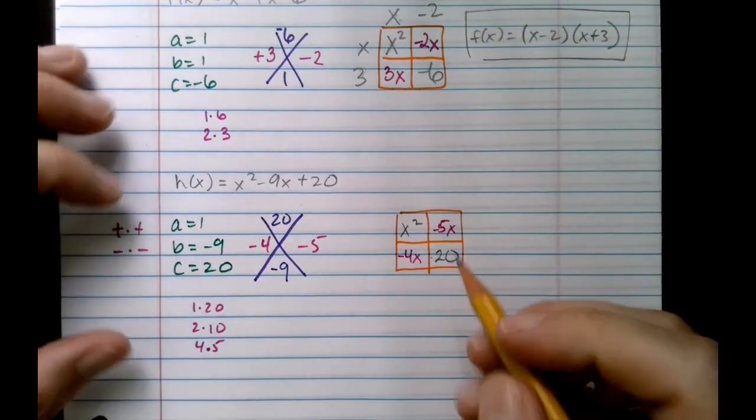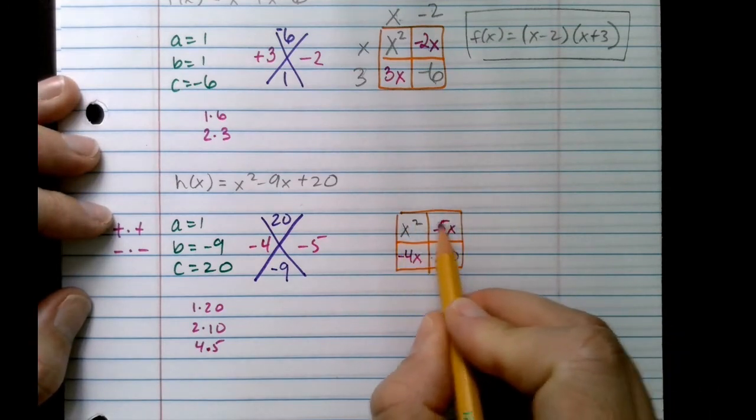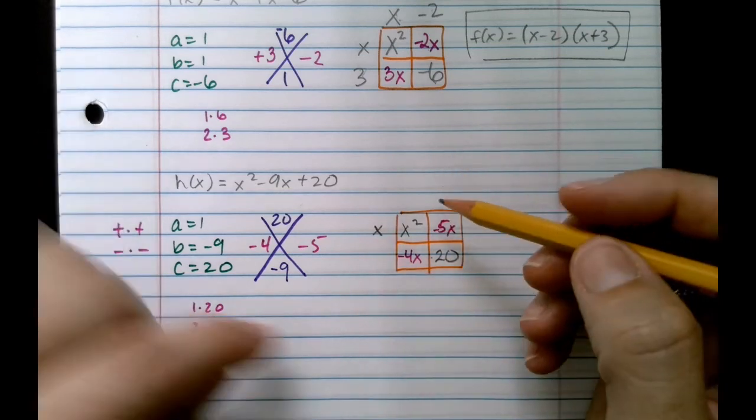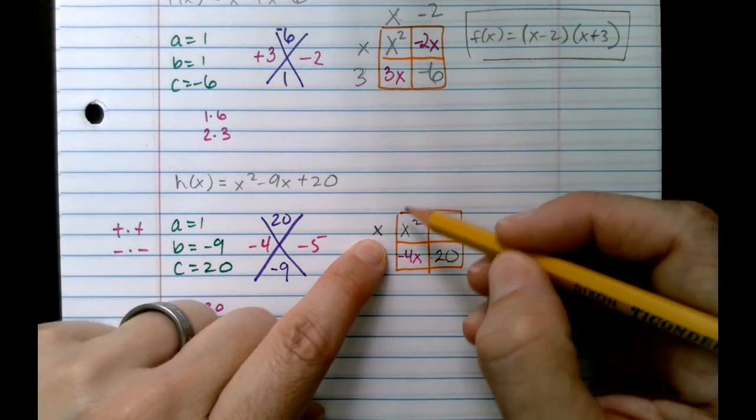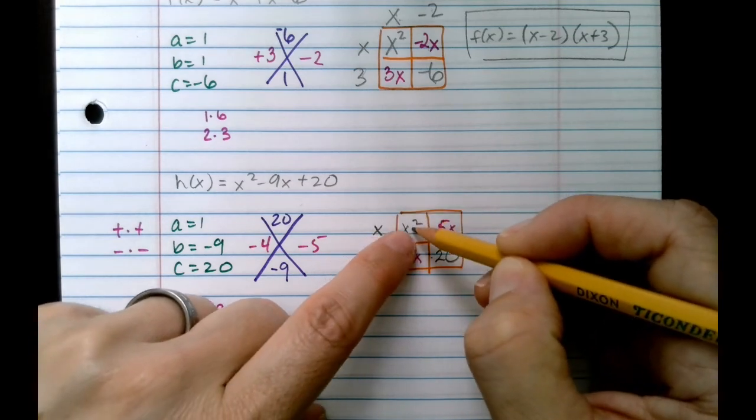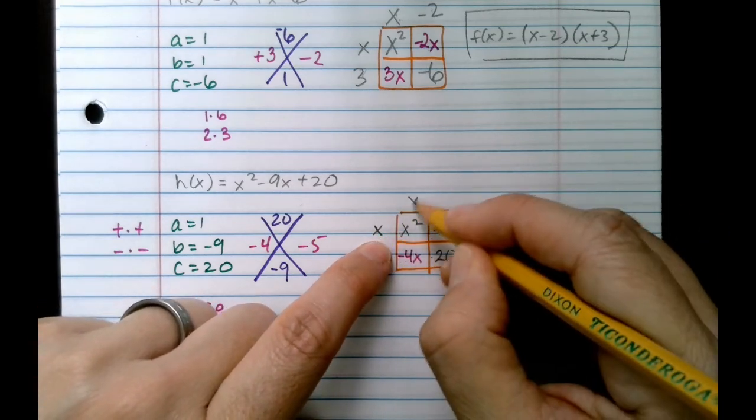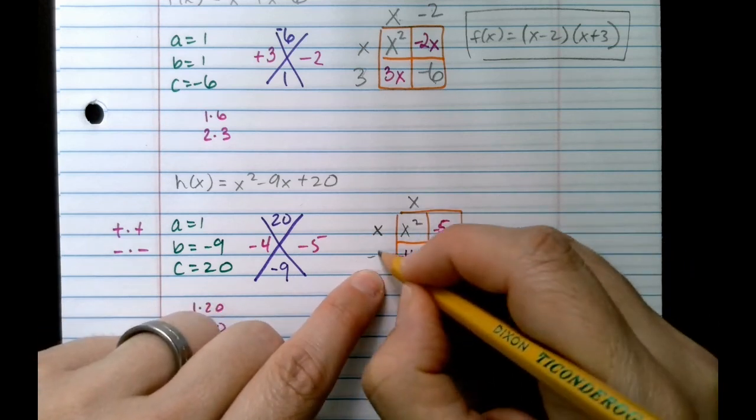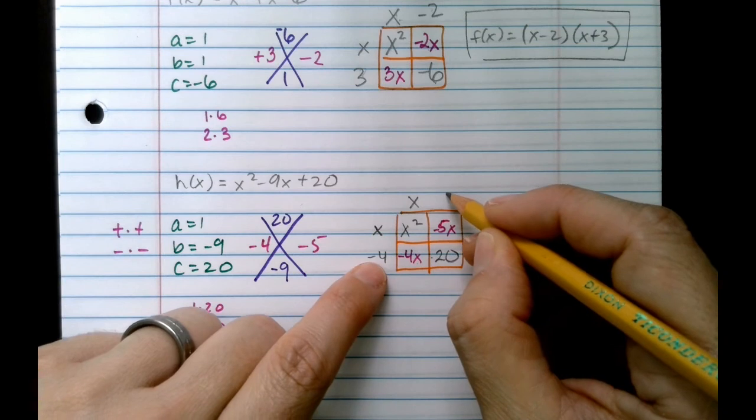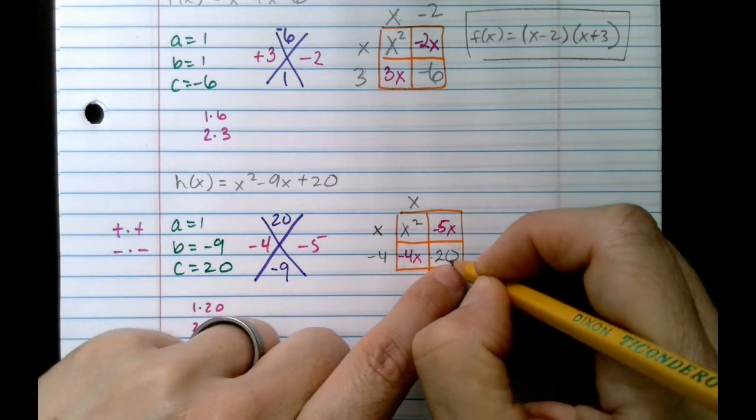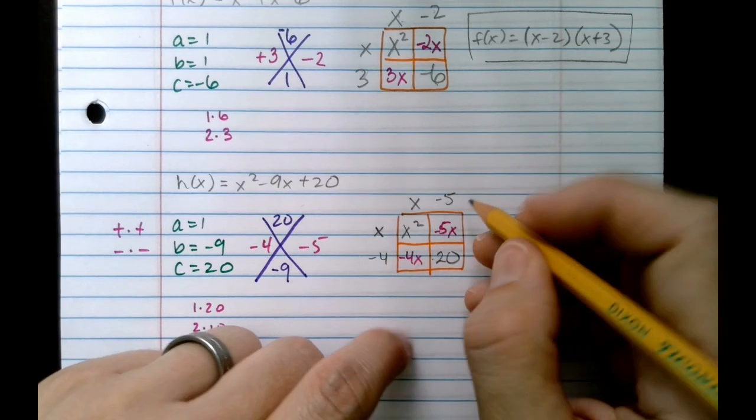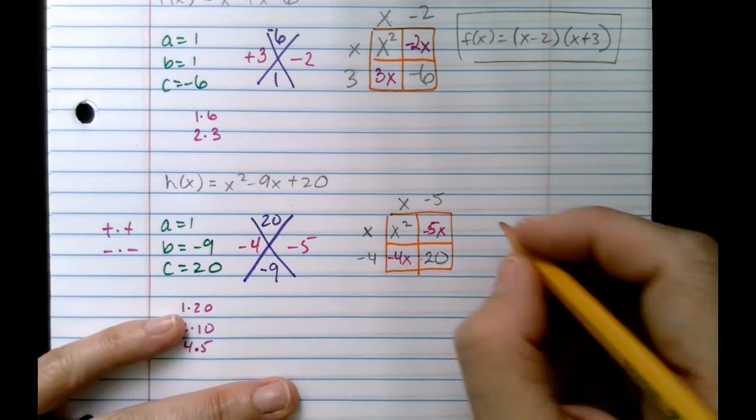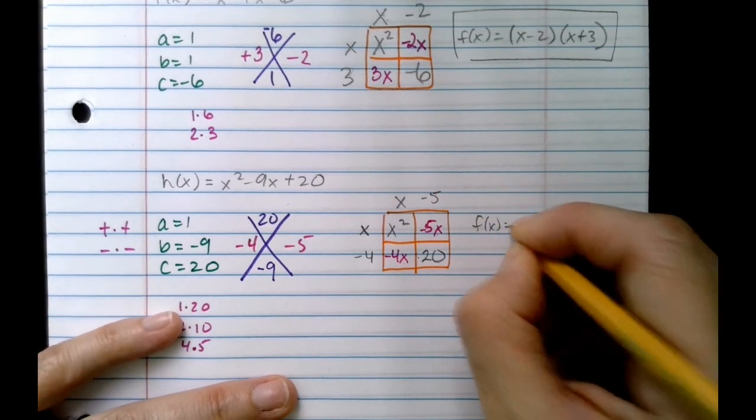Now we factor out the GCFs. So what is the GCF in this row between x squared and negative 5x? It's a single x. Now we're going to use areas to find the missing sides. x times something is x squared: x. x times some number down here is going to give me negative 4x: negative 4. Negative 4 times something over here is going to give me positive 20: it's negative 5. And then x times negative 5 is negative 5x. That's our check. So now we can write our factored form.